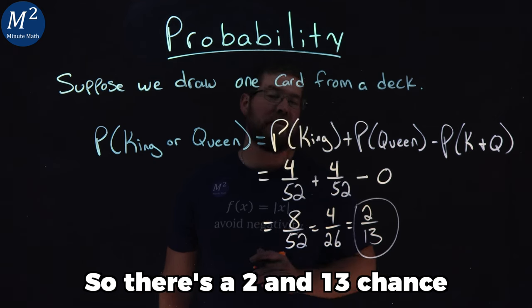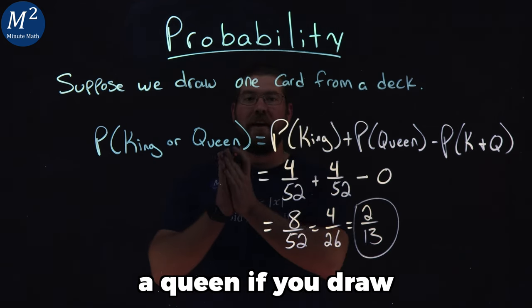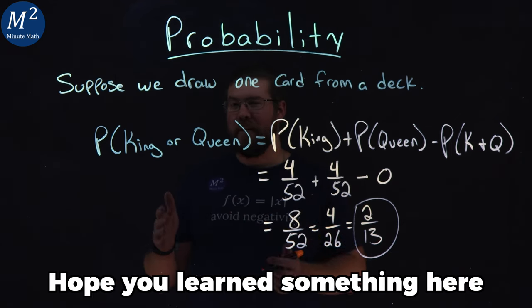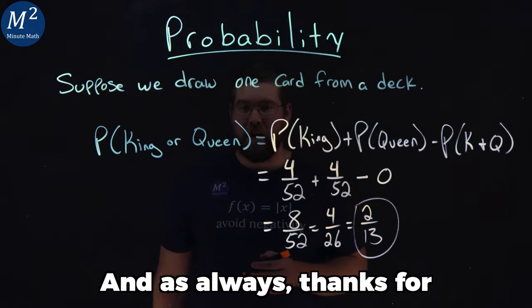So there's a two and 13 chance of getting a king or a queen if you draw one card from a deck. I hope you learned something here about probability. And as always, thanks for watching.